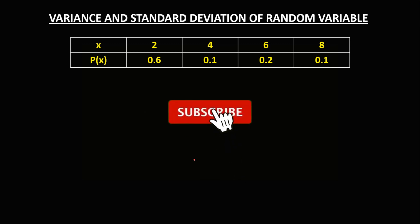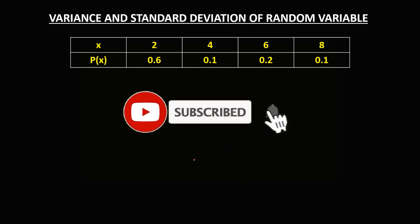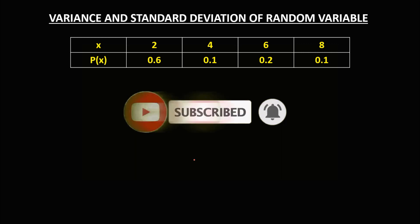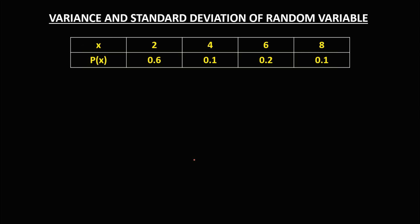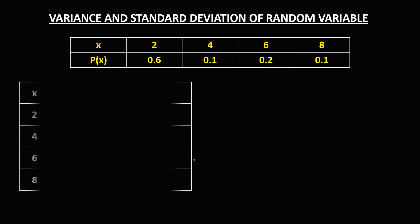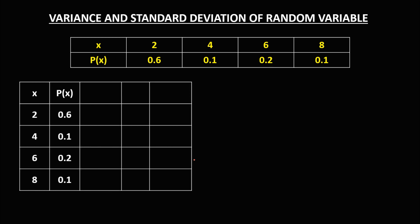Welcome to MathStorya. Today's topic is finding the variance and standard deviation of a random variable. We have a given random variable and we're going to use a table form to find the variance and the standard deviation.